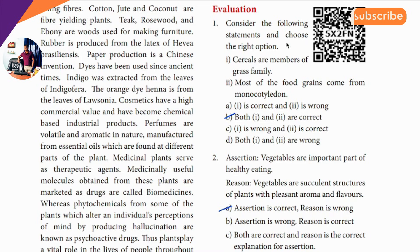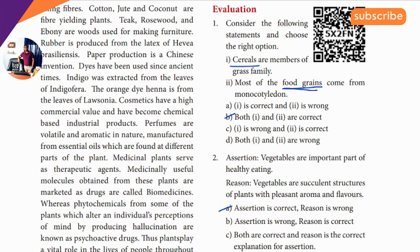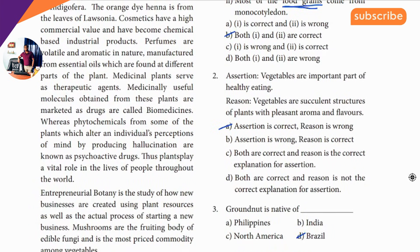Consider the following statements and choose the right options. Cereals are members of the grass family — food grains. So cereals are food grains, so food items are correct. Both one and two are correct.